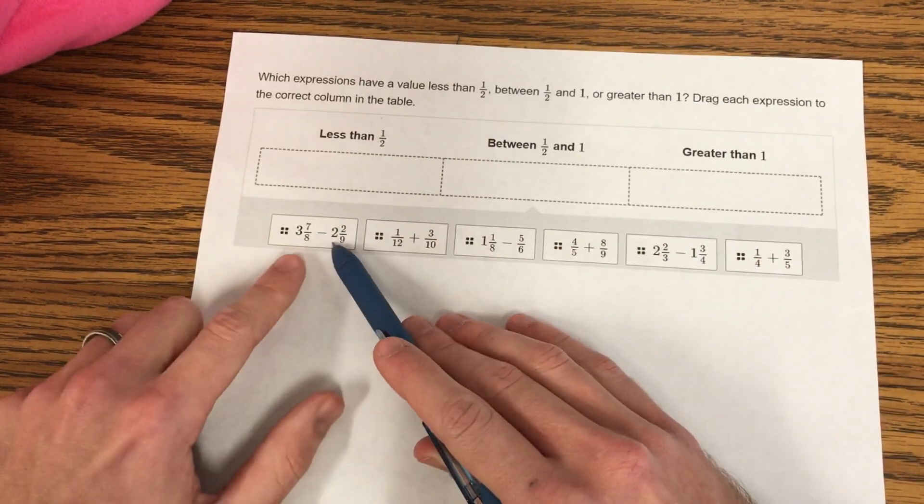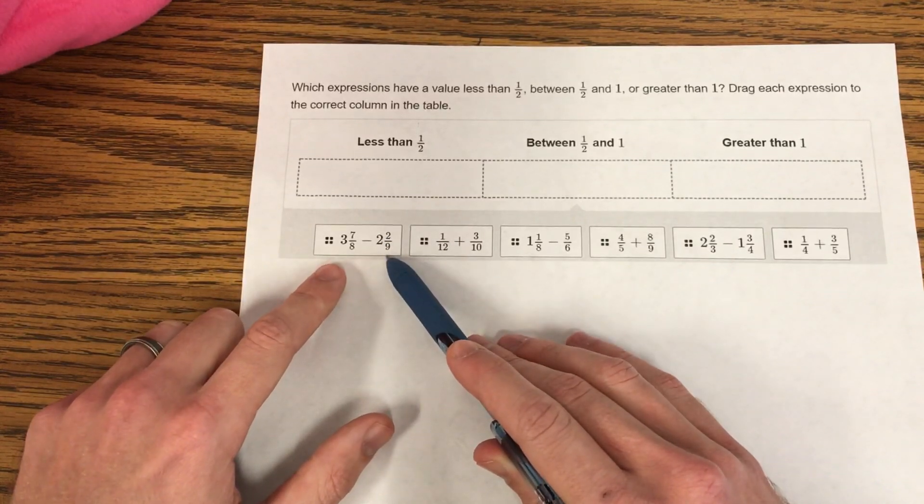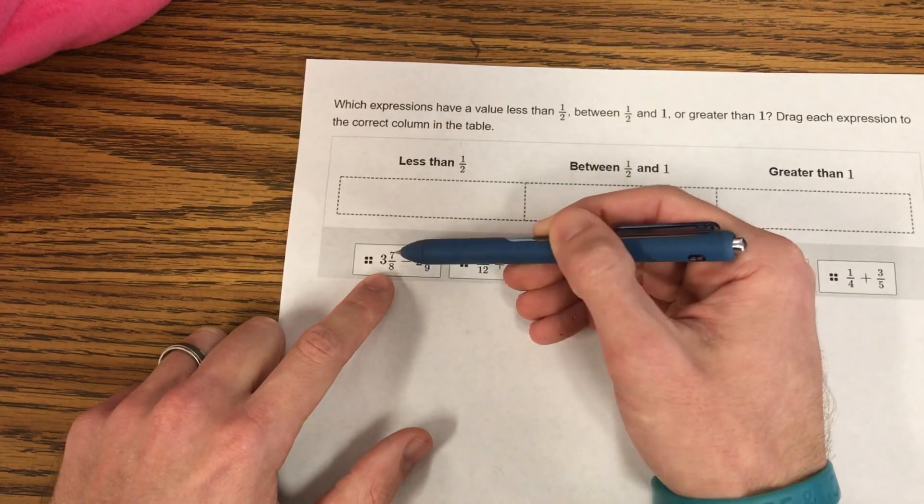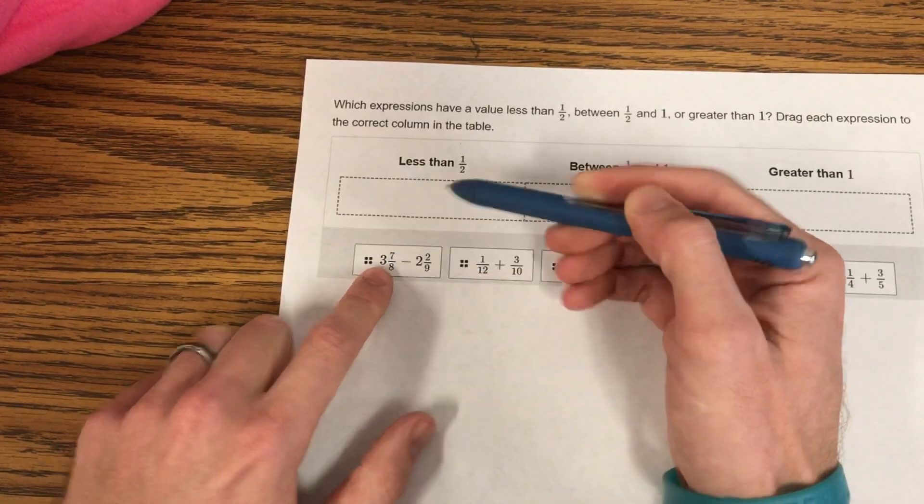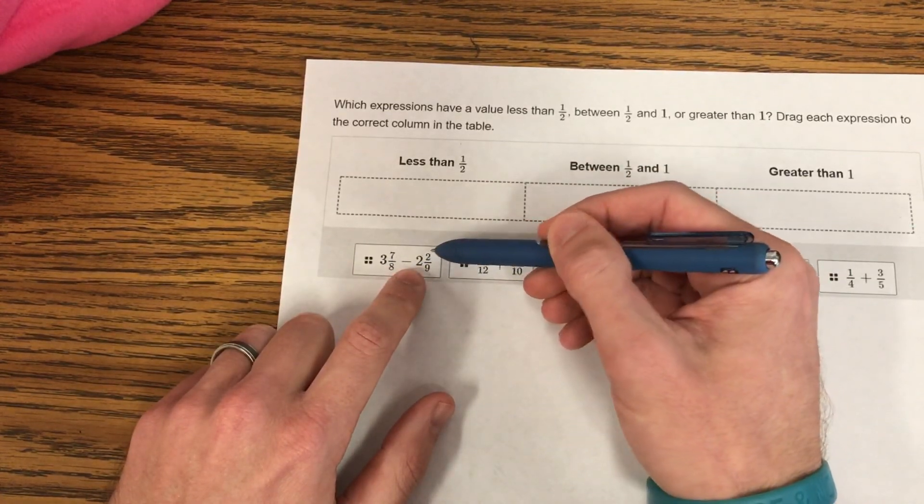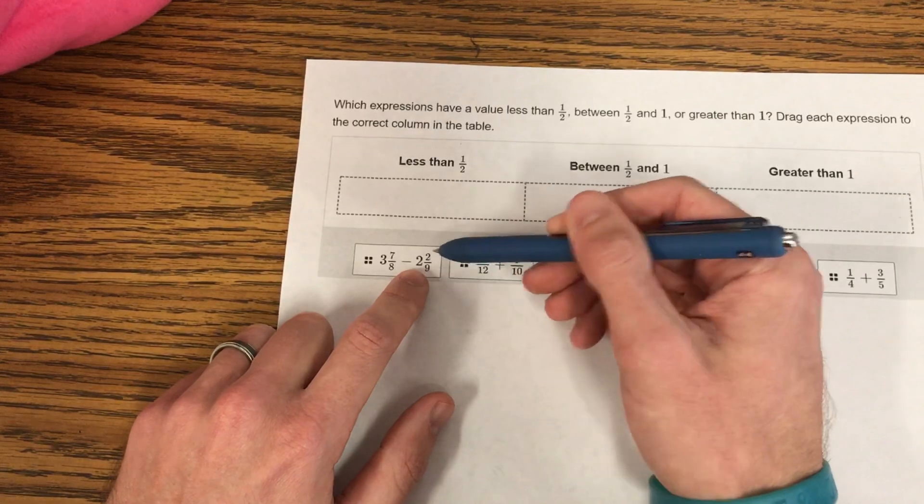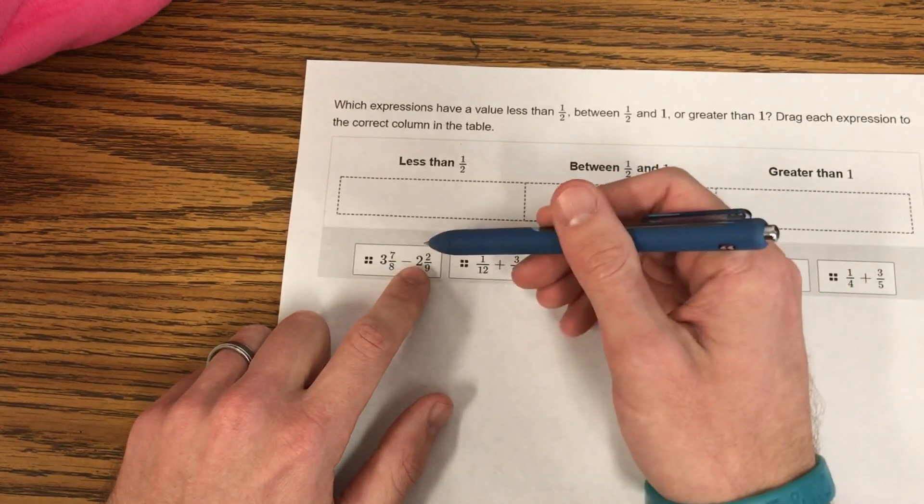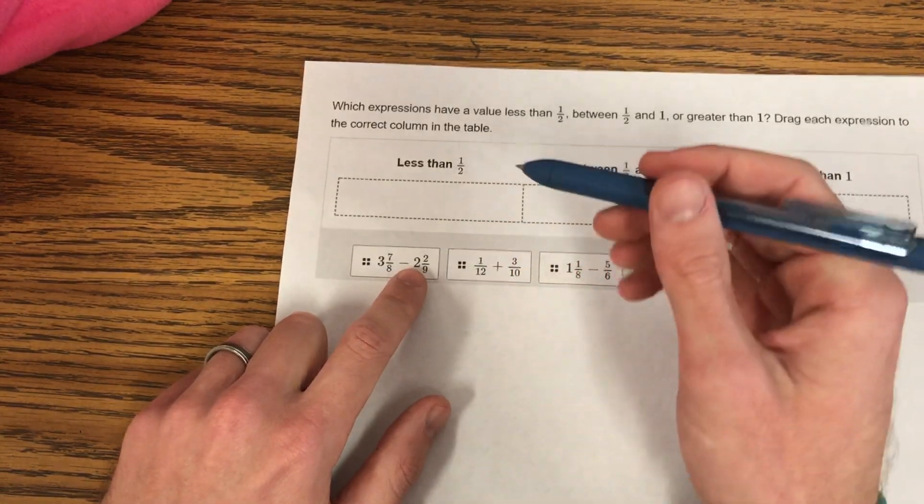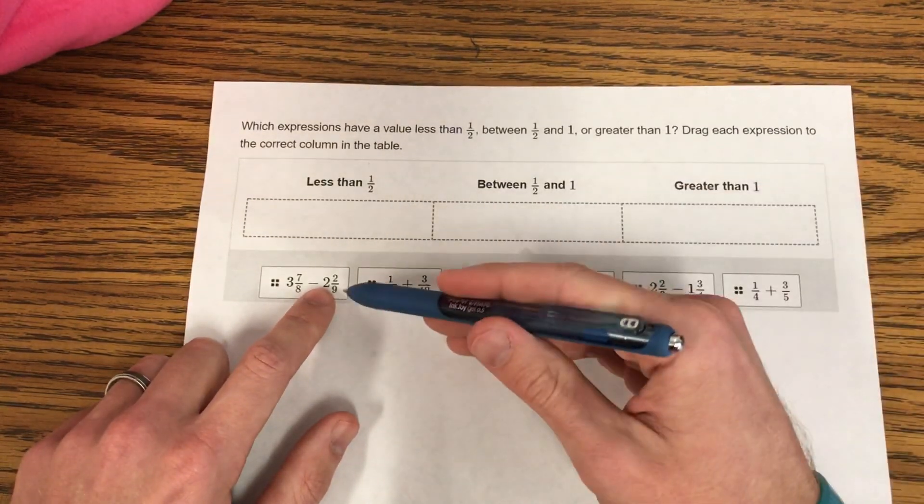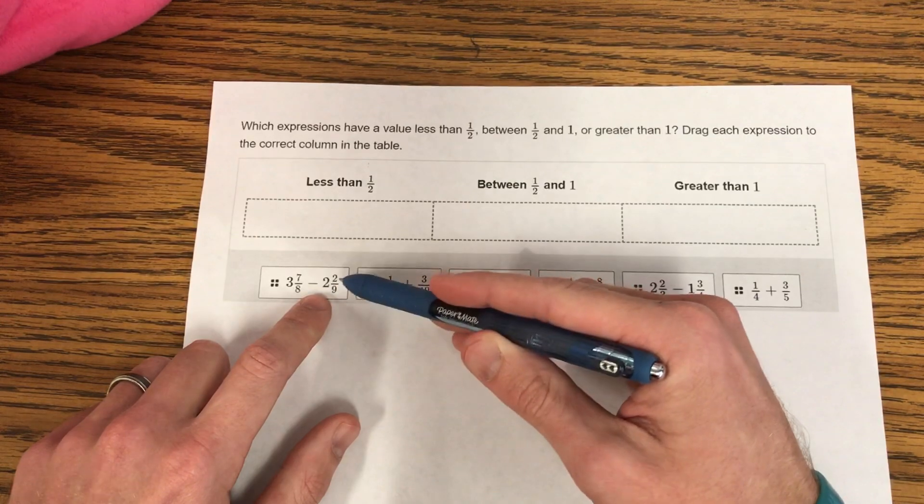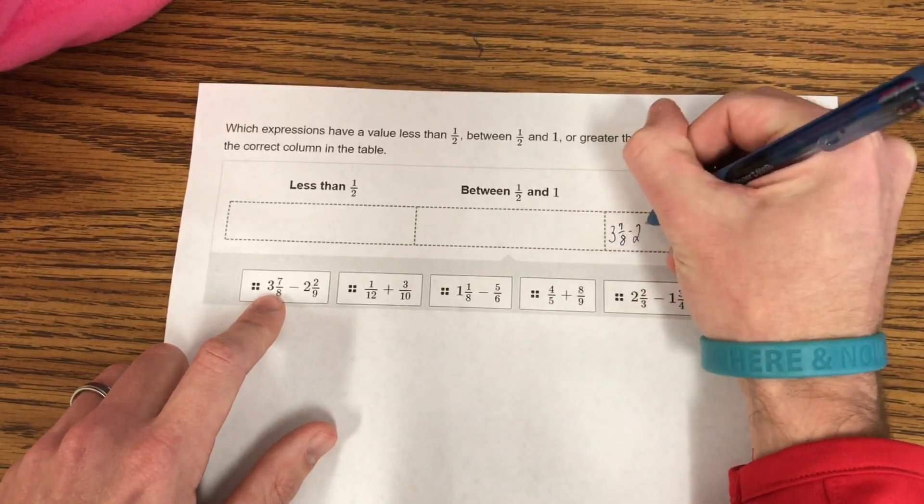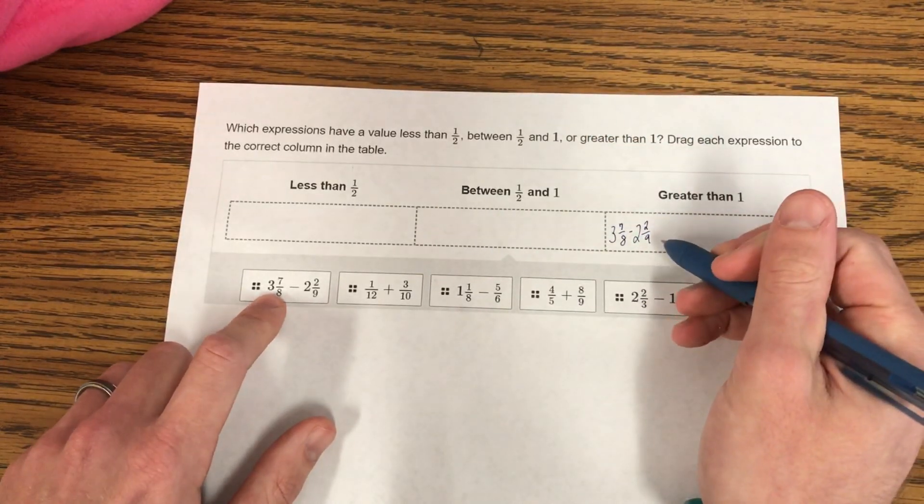Let's take a look at this one: 3 and 7/8 minus 2 and 2/9. Well, if I know eighths, and I'm thinking, okay, 8/8 is 1, 7/8 is really close to that. So this is close to 4. And even before I subtract or change anything, even if this was rounded up to 3, 2 and 1/2, or 2, it doesn't matter because 4 minus 2 is 2, 4 minus 3 is 1, and 4 minus 2 and 1/2 is 2 and 1/2. So I know that this one has to be greater than 1 because the difference, no matter how I round it, is going to go up because this is so close to 4.